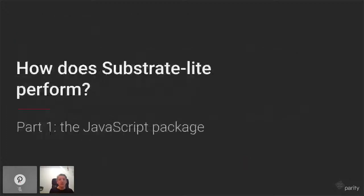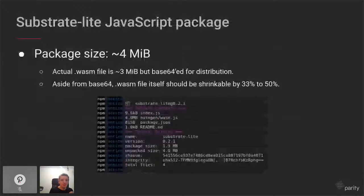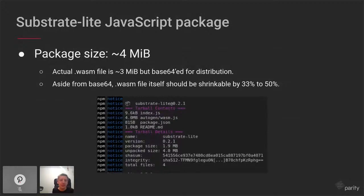So how does Substrate Light perform? For the JavaScript package, the Polkadot combined WASM is 22.6 megabytes. For Substrate Light, the package size is 4 megabytes — uncompressed. Compressed, that's approximately half. The actual WASM file is only 3 megabytes. To solve distribution issues, I base64-encode the WASM binary and embed it in a regular .js file, which solves basically 100% of distribution problems.